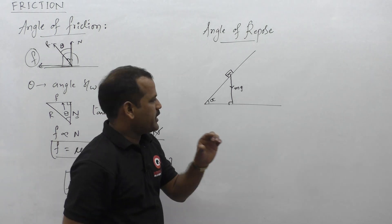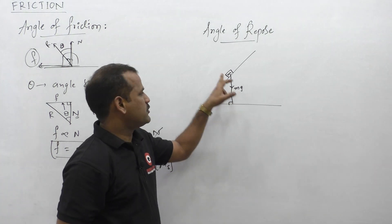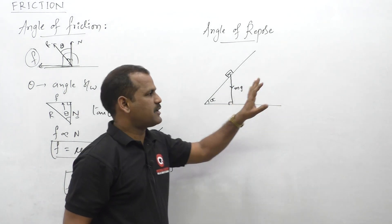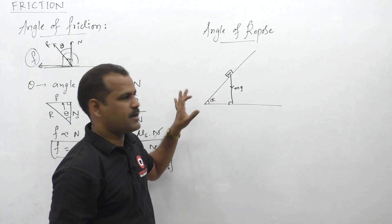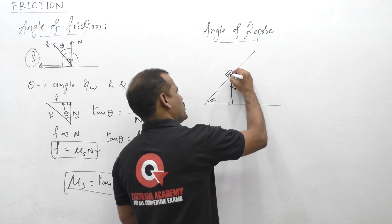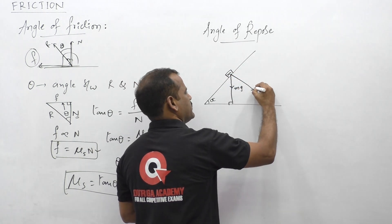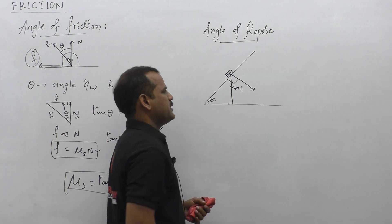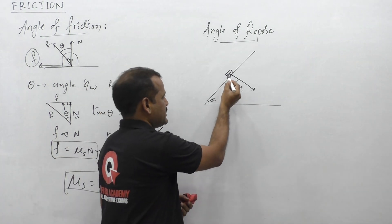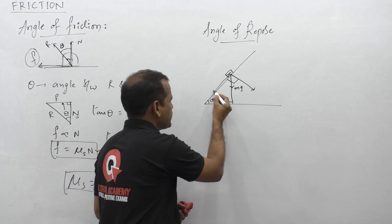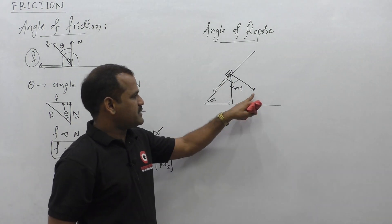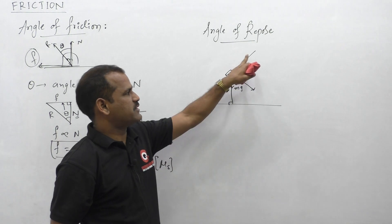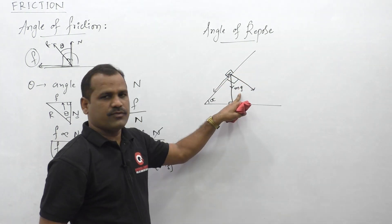We need to resolve this component mg into two components. One is perpendicular to this plane and the other one is along this plane. What is the expression for the perpendicular component and parallel component for this inclined plane in terms of this weight?